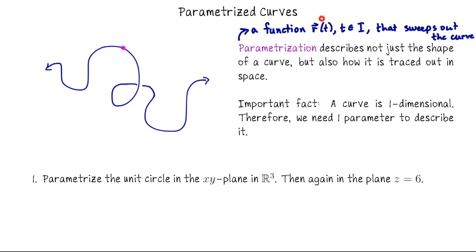So I've written here R of t, that's our vector-valued function, and this is t in i, where this is really like saying t is in some interval. In this lecture we're going to do five examples of parametrizations, but before we do that let's talk a little bit about what we mean when we say parametrization and what we really need to have.